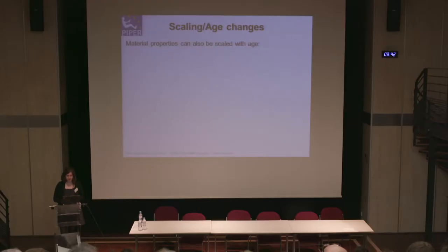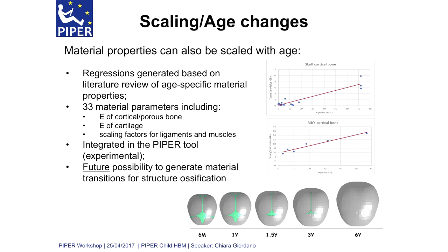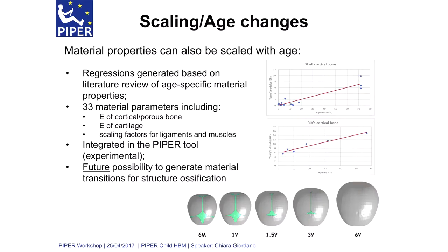We also allow material property scaling with age. We generated regressions based on a literature review of age-specific material properties. We have 33 material parameters that vary with age, mostly including Young's modulus of cortical and porous bone, Young's modulus of cartilage, and several scaling factors for ligaments and muscles. You can click a box in the tool to perform material property scaling. This is marked experimental because we did not perform validation tests after changing material properties — it's still work in progress.